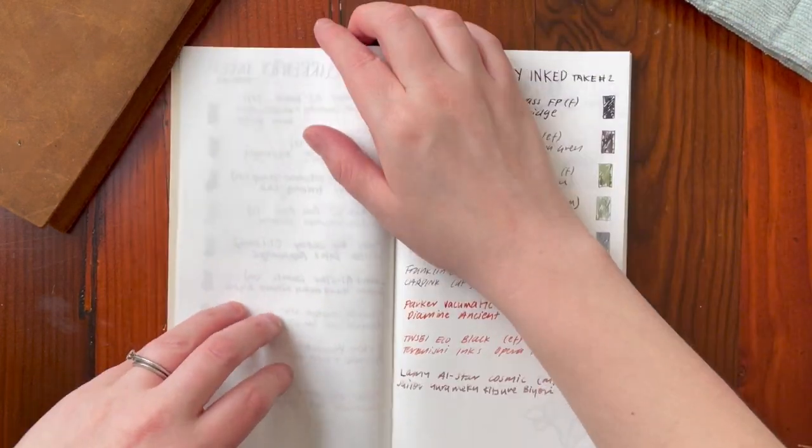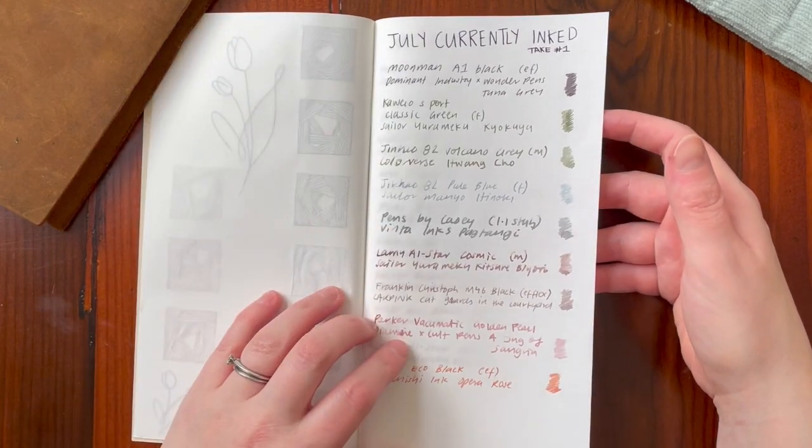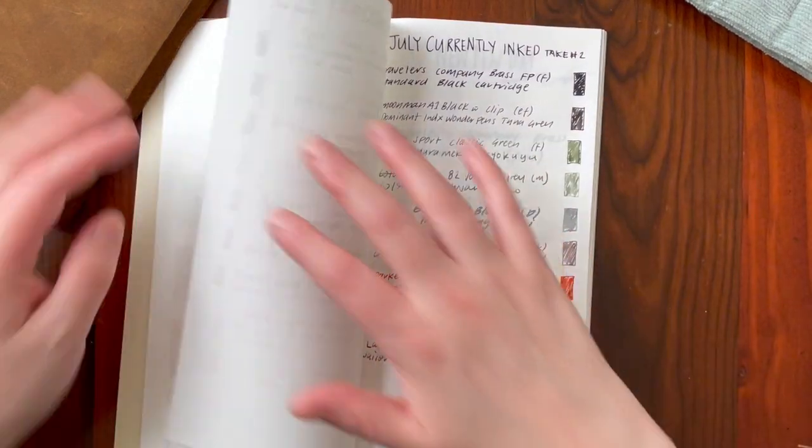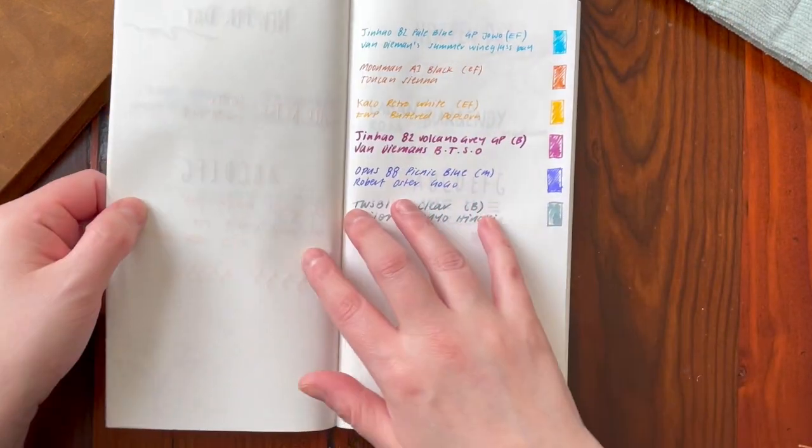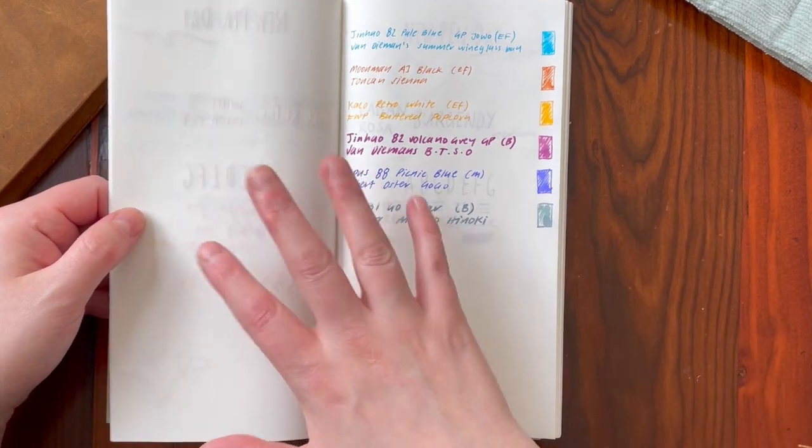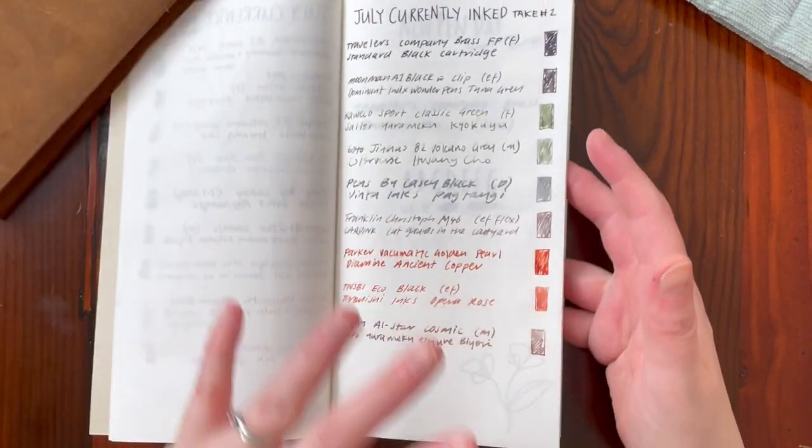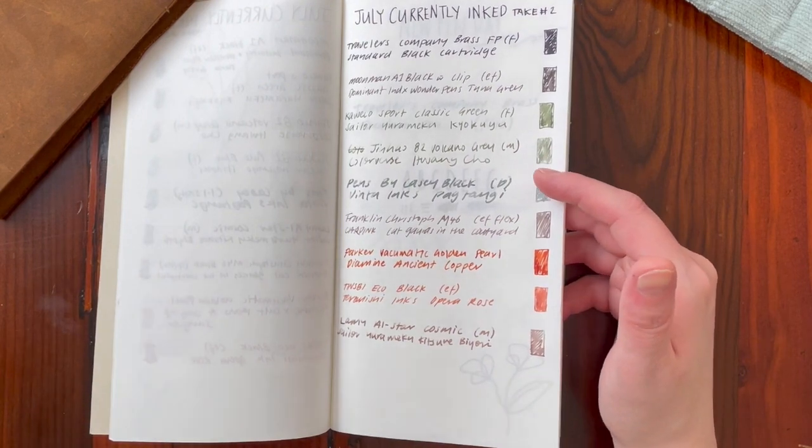So July currently inked took a few incarnations, that was kind of first and then I redid it, and then I actually ended up inking up some more as the month went on. So I'm gonna talk about it, it's gonna be a little bit more disjointed compared to other times.